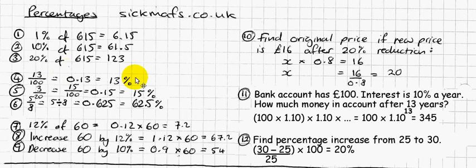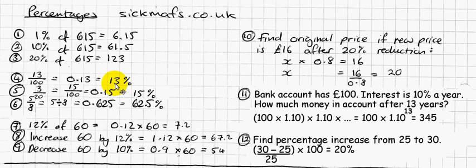I can jump straight from fraction to percentage: 13 out of 100 means 13%, just by definition, because percent means out of 100. So 13 out of 100 is 13%. And converting from a decimal is really easy to see: 0.13 is 13%. If it were 0.03, it would be 3%.